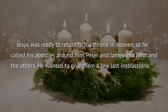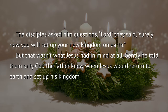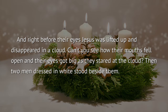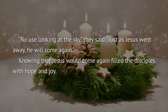Jesus was ready to return to his throne in heaven, so he called his apostles around him — Peter and James and John and the others. He wanted to give them a few last instructions. The disciples asked him, "Lord, surely now you will set up your new kingdom on earth." But that wasn't what Jesus had in mind at all. Gently, he told them only God the Father knew when Jesus could return and set up his kingdom. And right before their eyes, Jesus was lifted up and disappeared in a cloud. Then two men dressed in white stood beside them. "No use looking at the sky," they said. "Just as Jesus went away, he will come again."